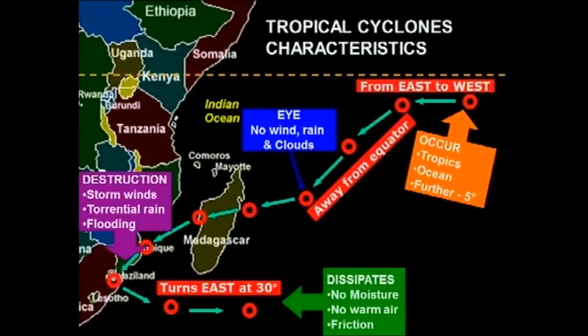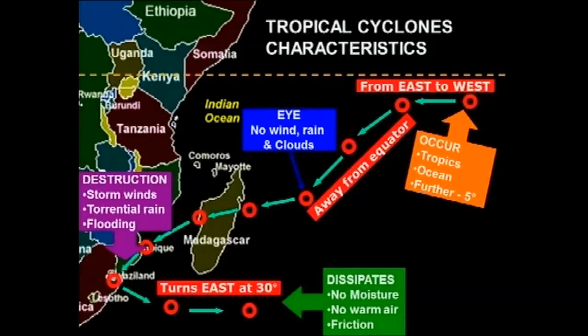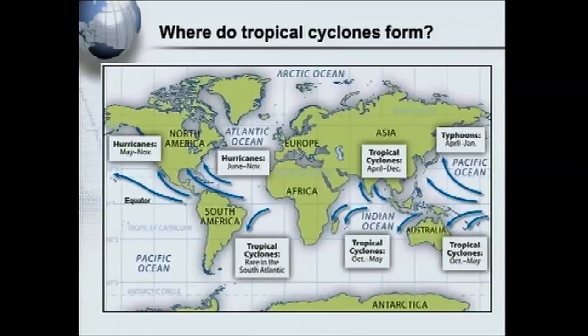The following movement is that it turns east at 30 degrees, and as it turns east, it dissipates. Why does it dissipate? Because there's no moisture, no warm air, and because of friction. The characteristics work in threes: where they occur — tropics, ocean, further than five degrees; how it moves — east to west, away from equator, turns east at 30 degrees; three characteristics of the eye; how it causes destruction; and why it dissipates.